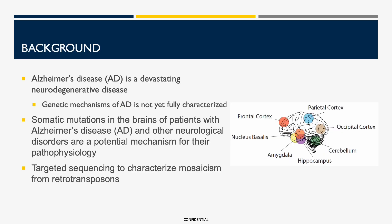Alzheimer's disease is a devastating neurodegenerative disease and the most common form of dementia. Though several loci have been linked to an increased risk of Alzheimer's disease, the underlying genetic mechanisms are not yet fully understood. One potential disease mechanism is the accumulation of somatic mutations in neurons — mutations that can arise in a single cell and be passed on to its descendants, leading to an accumulation of mutations in tissues such as the brain.